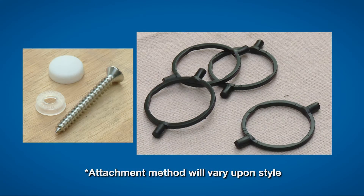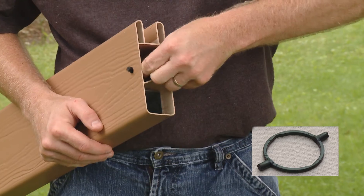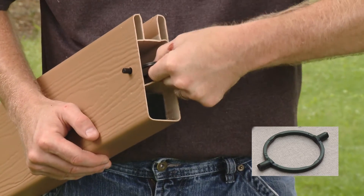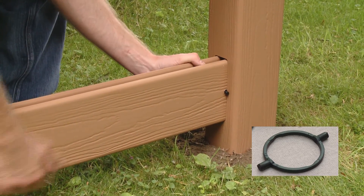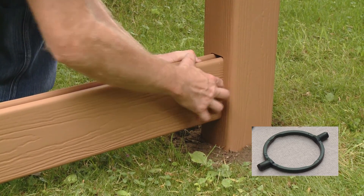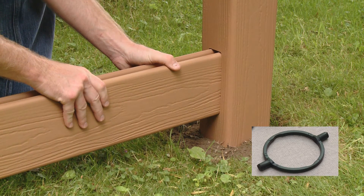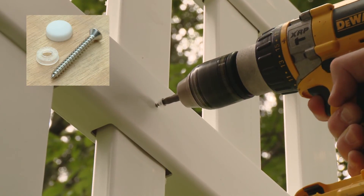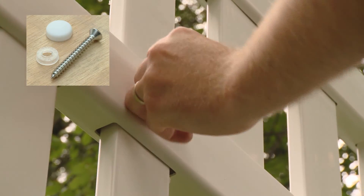There are a number of fasteners. Lock rings can be squeezed together to insert into a rail, then expand to lock a rail in place. Most fence styles use lock rings to attach the rail to the post. Snap caps and screws are used to attach pickets to a rail.